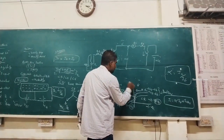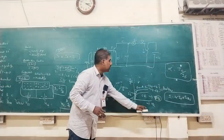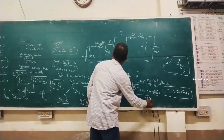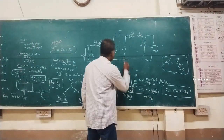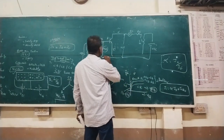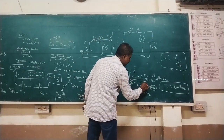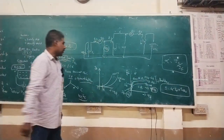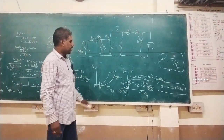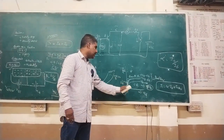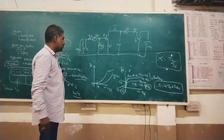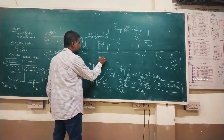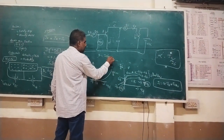For common emitter characteristics, VCE is plotted against output current IC with IB as the varying parameter. The current scale changes from milliamperes to microamperes. Similar input and output characteristics graphs are obtained, and the current amplification factor beta equals IC divided by IB.